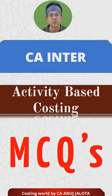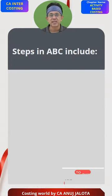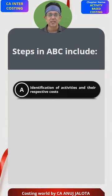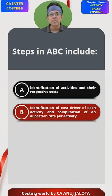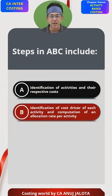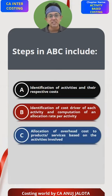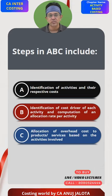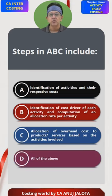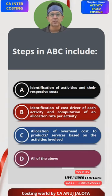CA Inter Activity Based Costing MCQs. Steps in Activity Based Costing includes: A. Identification of the activities and their respective costs; B. Identification of the cost driver for each activity and calculation of allocation rate per activity; C. Allocation of overhead cost to the products or services based upon the activities involved; and D. All of the above.